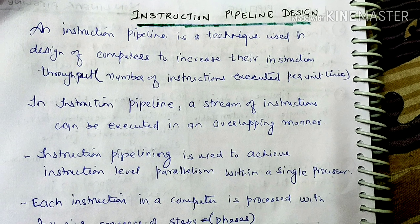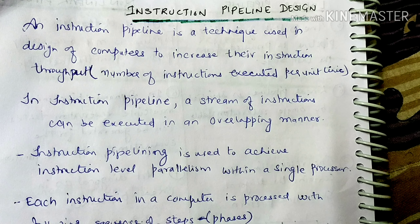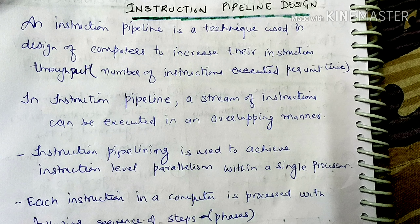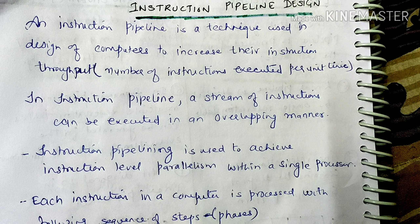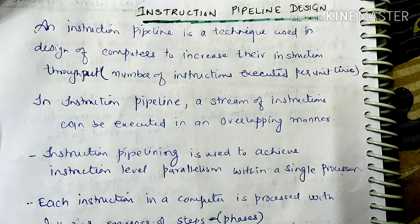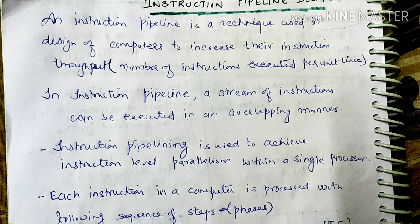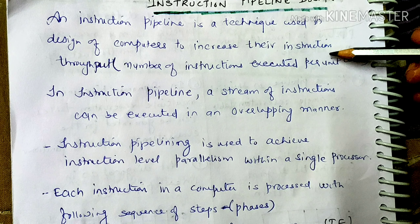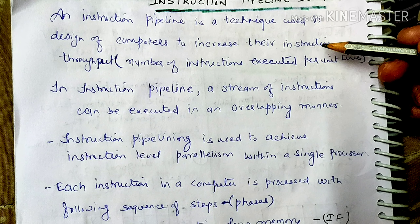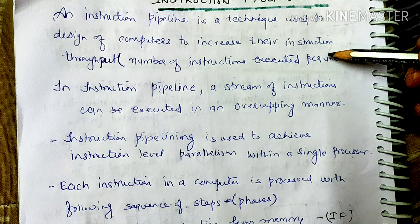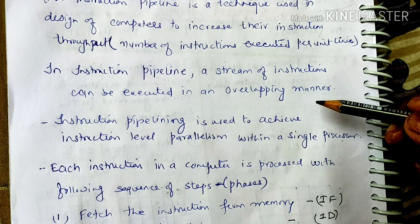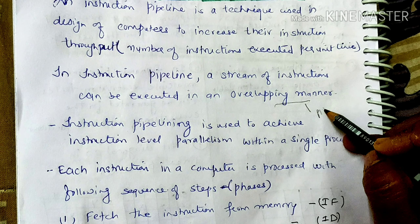We are looking at the next topic: instruction pipeline design. If we want to execute more instructions in a single processor, we use pipelining in an overlapping manner to increase throughput. An instruction pipeline is a technique used in the design of computers to increase instruction throughput — that is, the number of instructions executed per unit time. Pipelining means overlapping instruction execution.